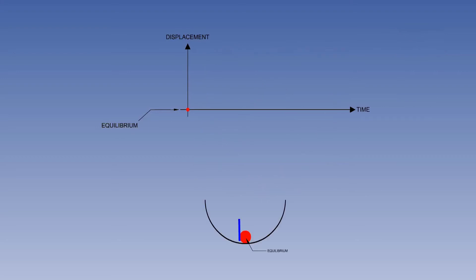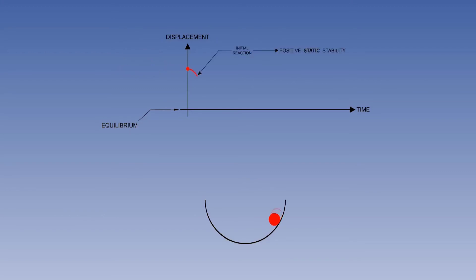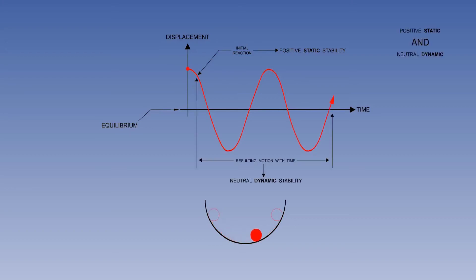Let's reset the graph and include the ball in the bowl. Displacement takes place, the disturbing force is removed, and the initial movement back towards equilibrium begins. Over a period of time, there is continuous oscillation through equilibrium with no damping of motion — an illustration of positive static and neutral dynamic stability. Clearly, energy is being added for this to occur.